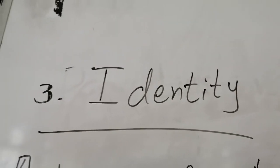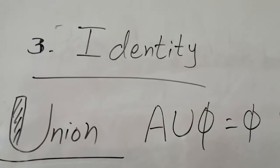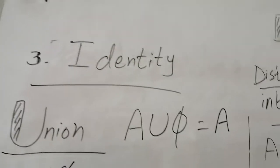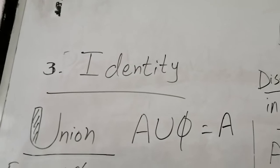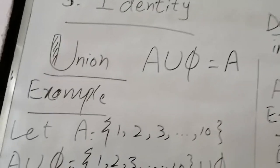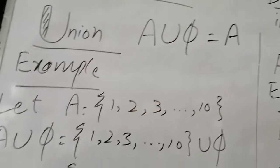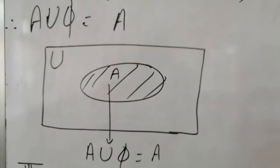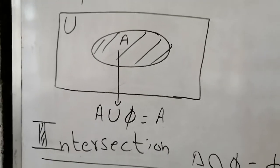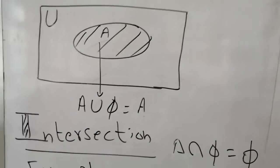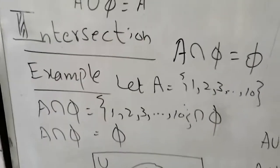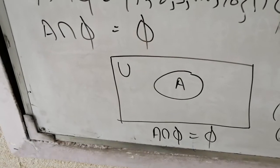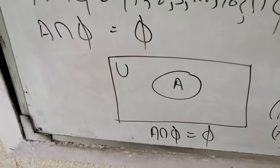The next property is the identity property, discussed for both union and intersection. For union: A union empty set equals A. For example, A is the first ten natural numbers; taking union with the empty set gives back A. For intersection: A intersection U (universal set) equals A. The Venn diagram highlights the A set in both cases.